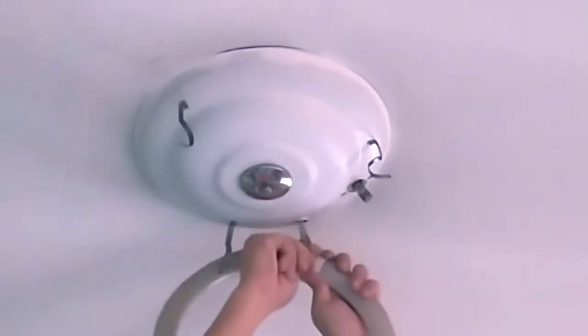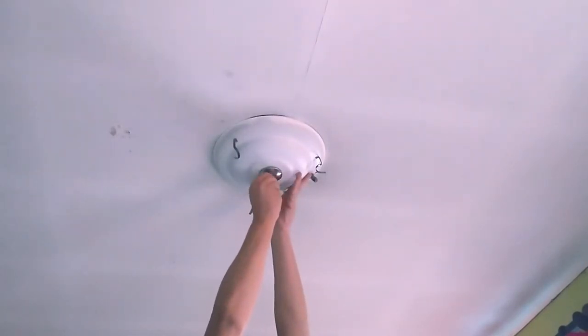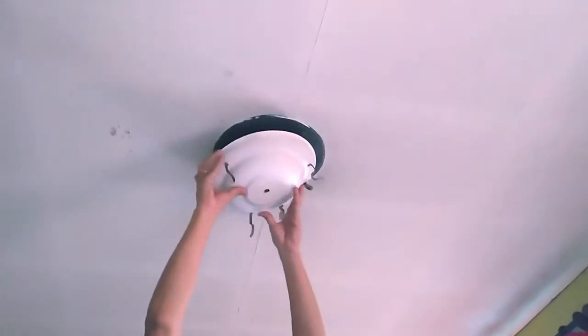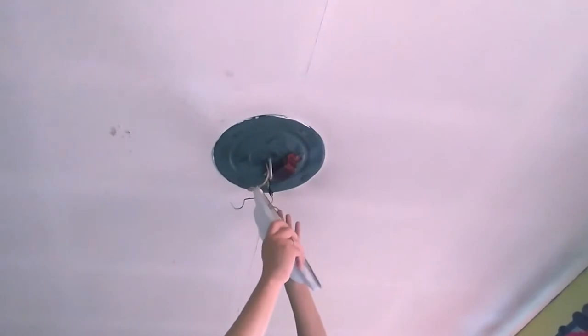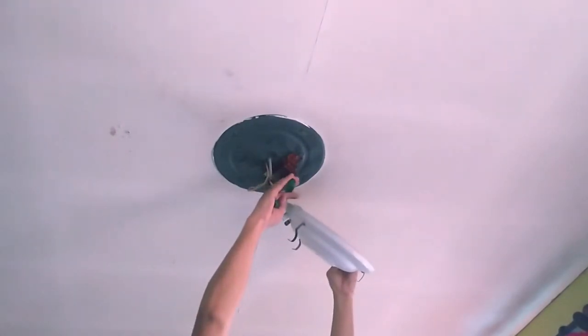And disconnect its plug. Then, with a wrench, let's loosen the lock nut that holds the lamp holder housing. While grasping the housing, cut the wiring above it.